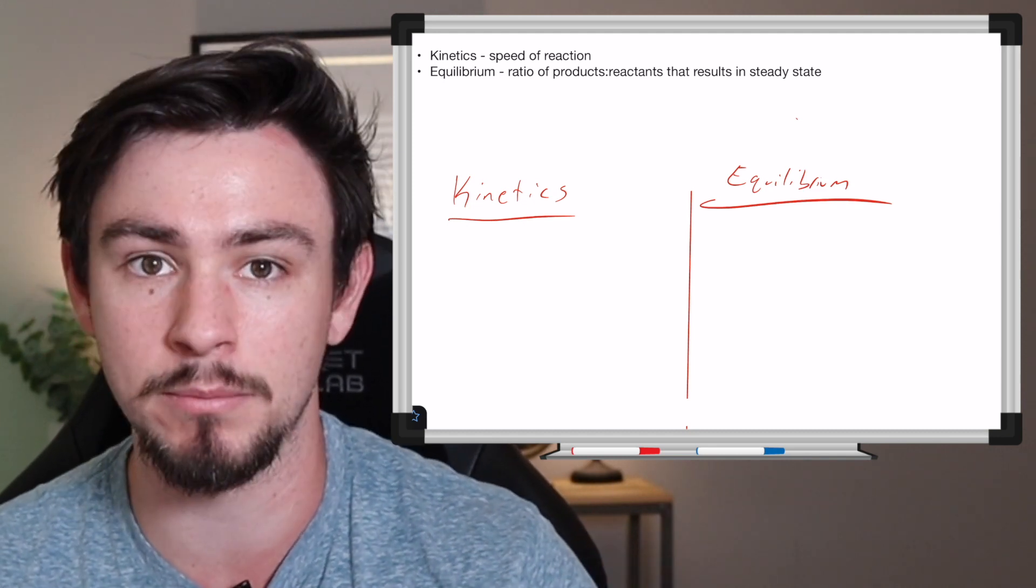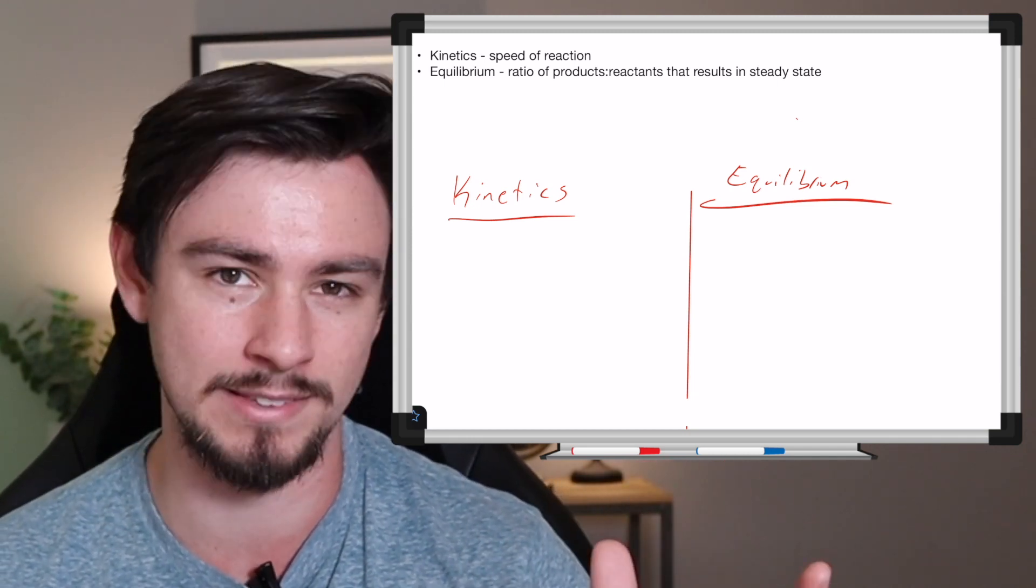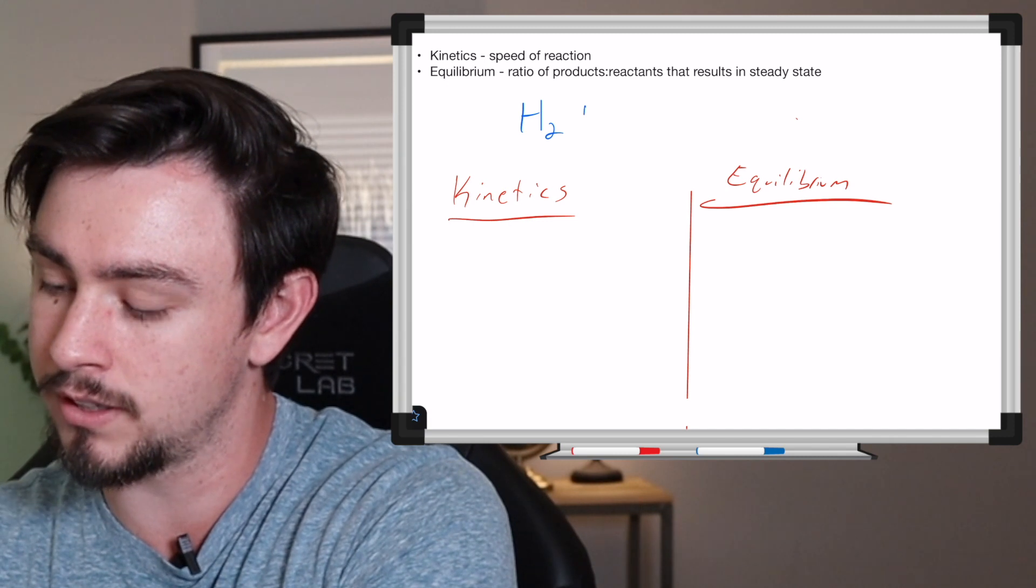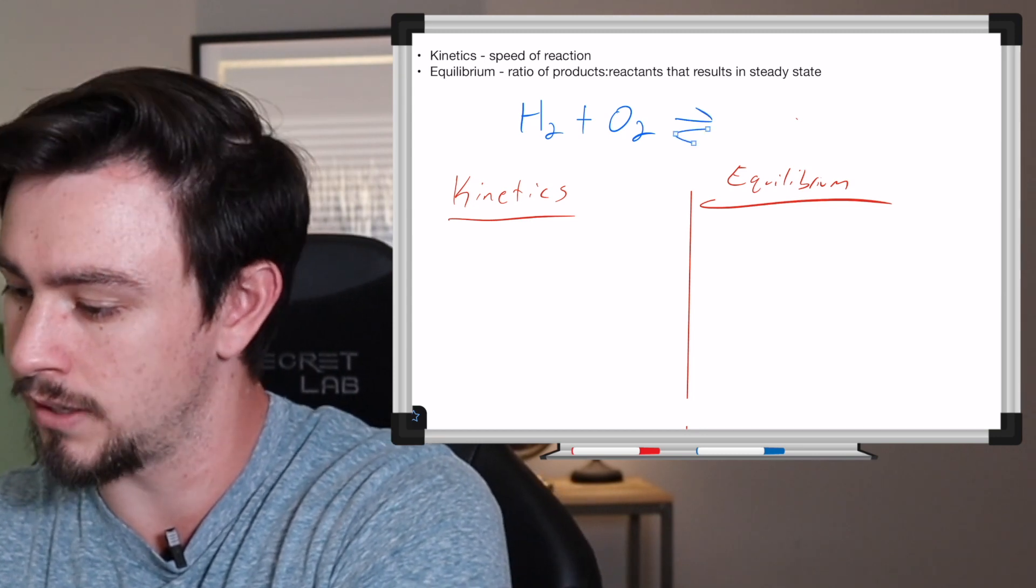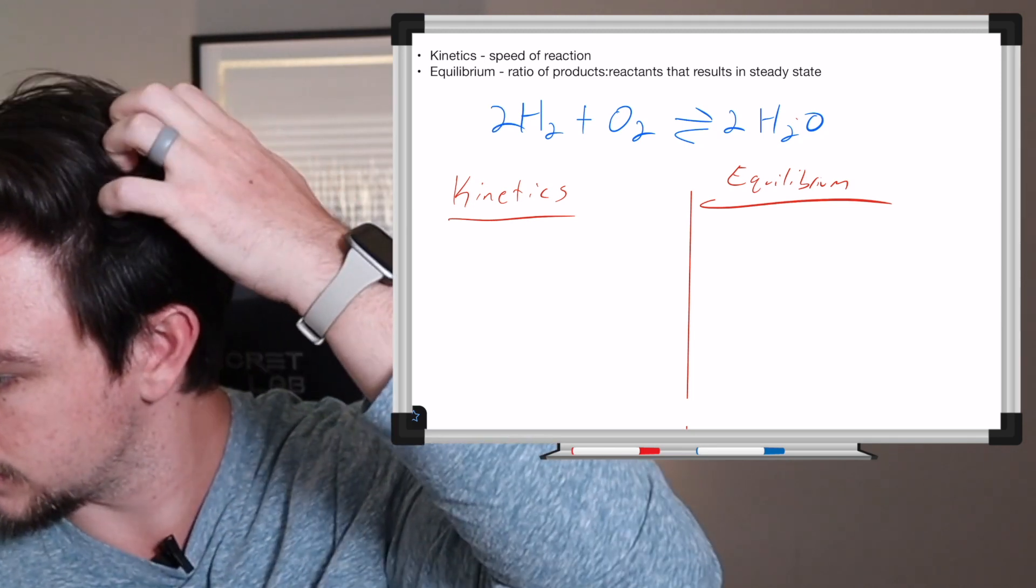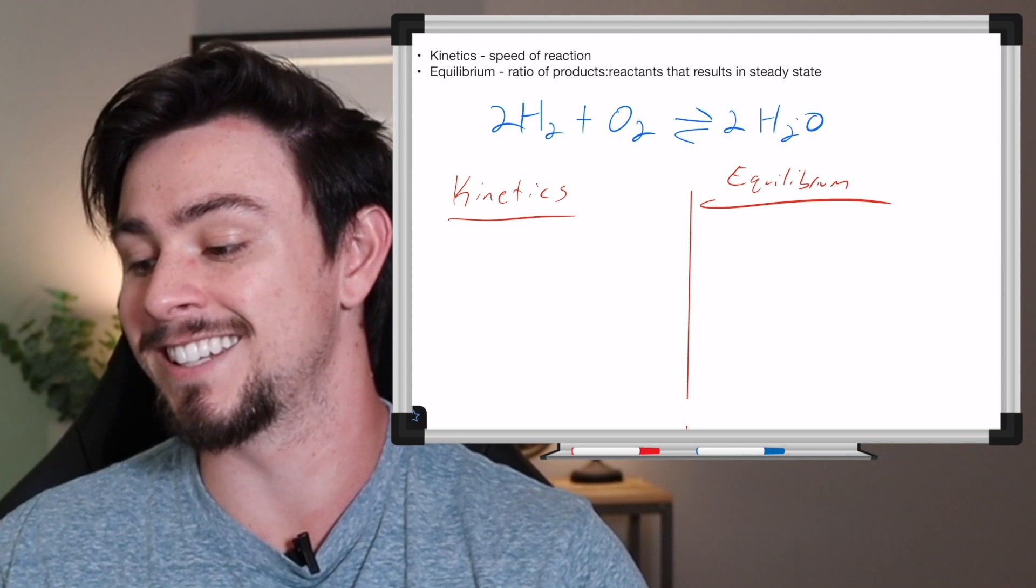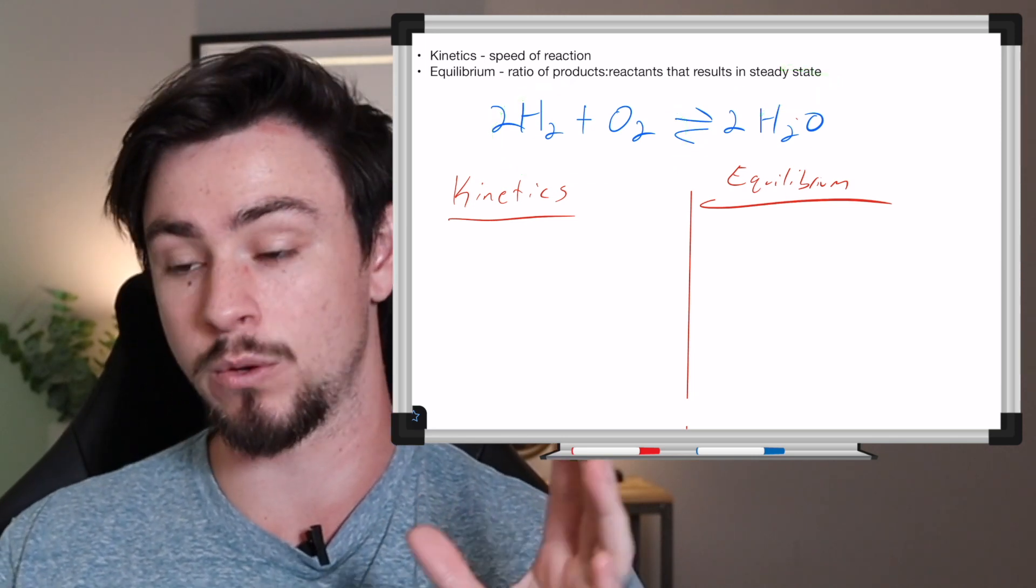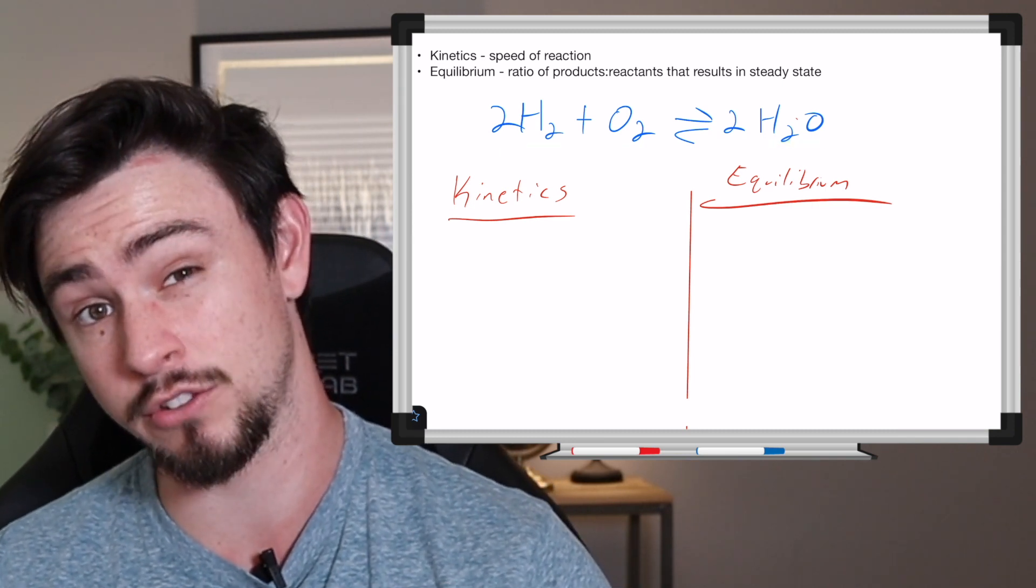Let's first start with what they have in common because students, myself included, frequently misconstrue these two and it's like why is that happening? It's because they're both describing reactions. So I want you to imagine just a very classic reaction of H2O2 goes to water. So 2H2O, how do we balance this? Put a 2 there. So they're both talking about a reaction.